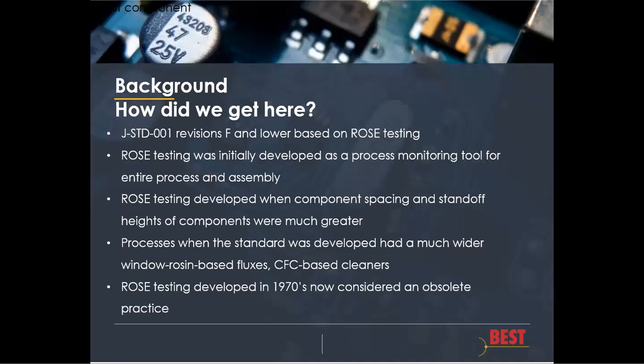So how did we get here? Previous versions were based on ROSE testing. In ROSE testing, what we had was a single go/no-go number, and any residue values below 1.56 micrograms NaCl equivalent per centimeter squared — anything less than that was deemed to be acceptable, and anything greater than that was deemed to be dirty or a defect.